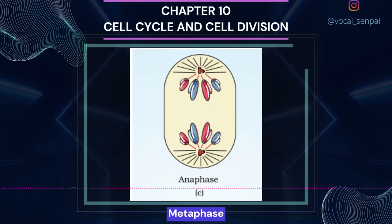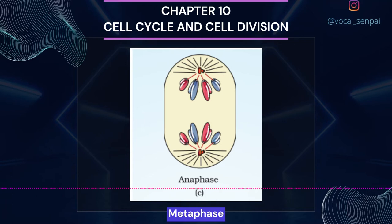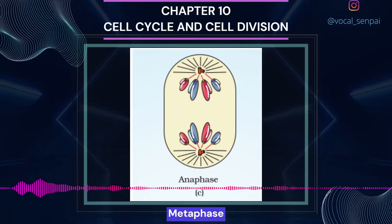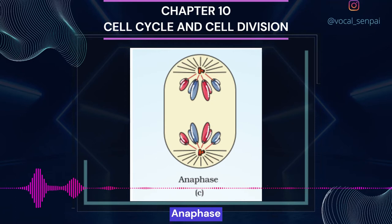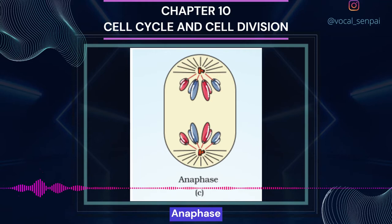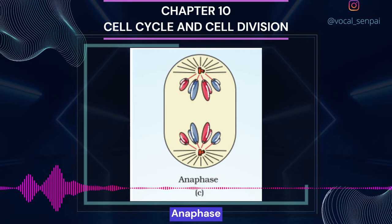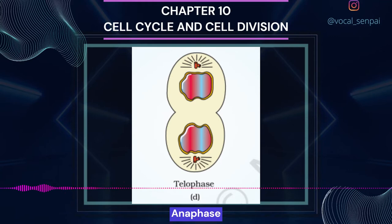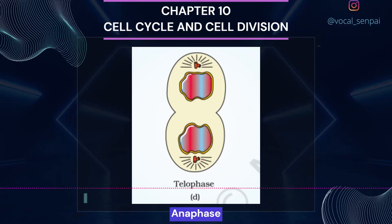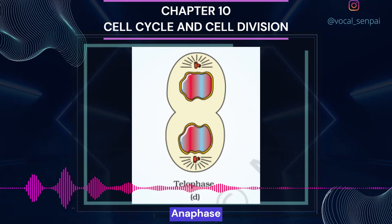The key features of metaphase are spindle fibers attached to kinetochores of chromosomes, and chromosomes aligned along the metaphase plate through spindle fibers to both poles. At the onset of anaphase, each chromosome arranged at the metaphase plate is split simultaneously and the two daughter chromatids — now referred to as daughter chromosomes — begin their migration towards the two opposite poles. The centromere of each chromosome remains directed towards the pole, at the leading edge, with the arms of the chromosome trailing behind. Anaphase is thus characterized by centromeres splitting, chromatids separating, and chromatids moving to opposite poles.